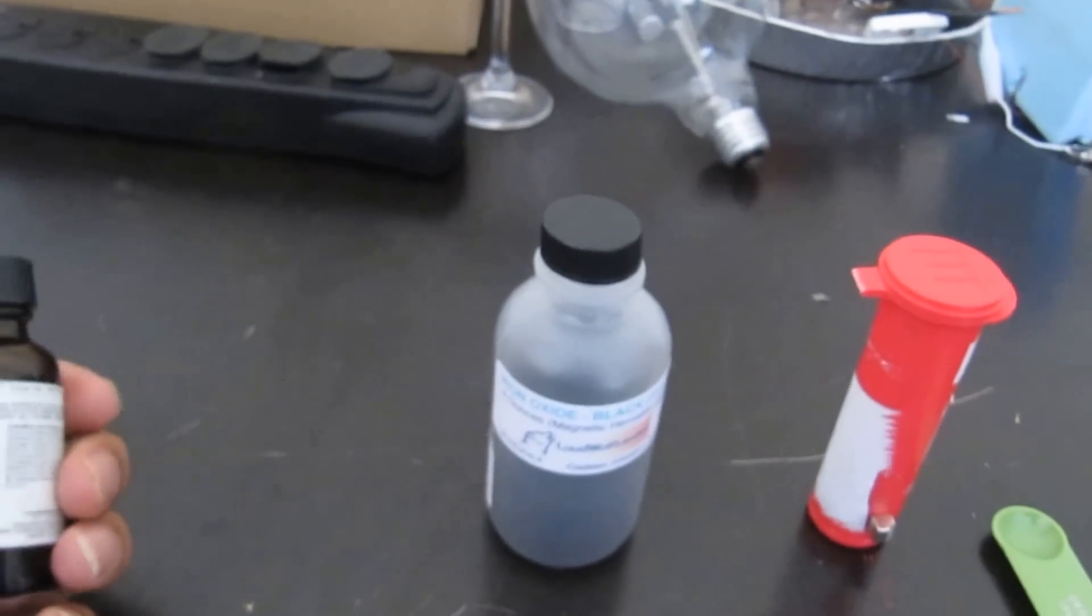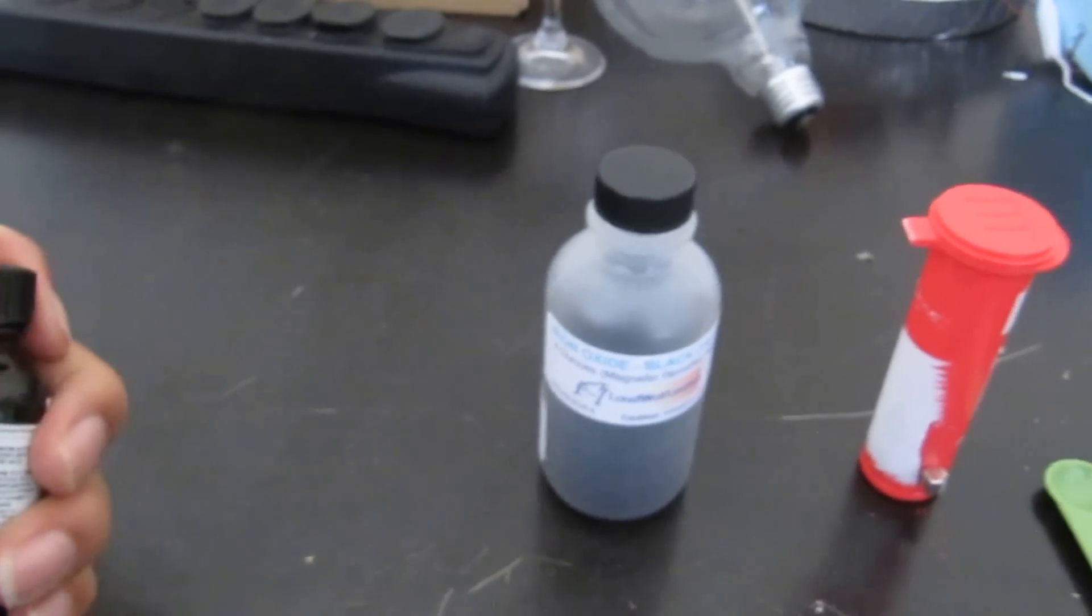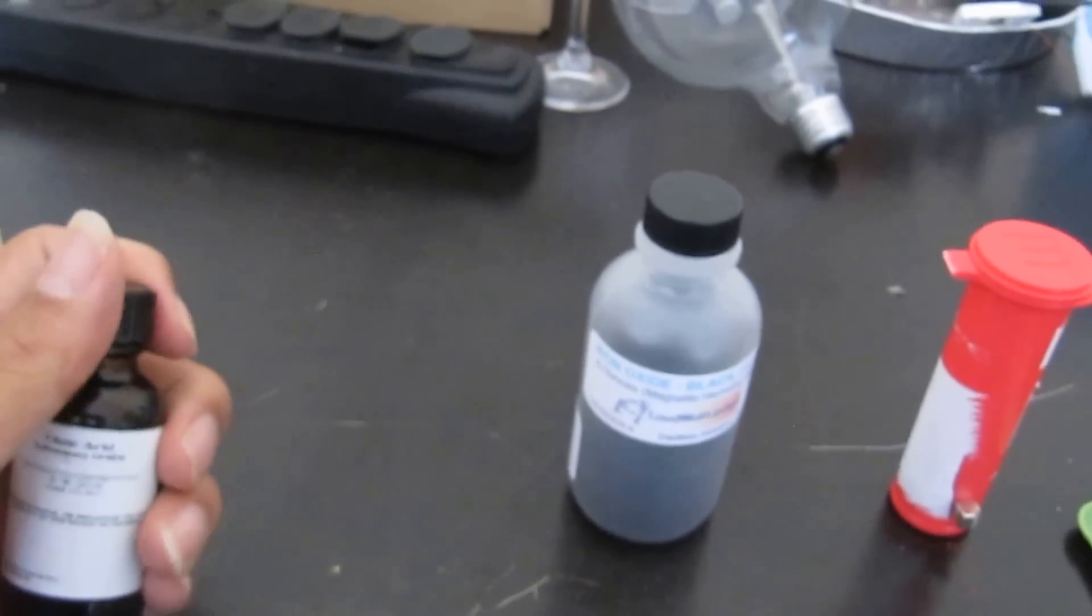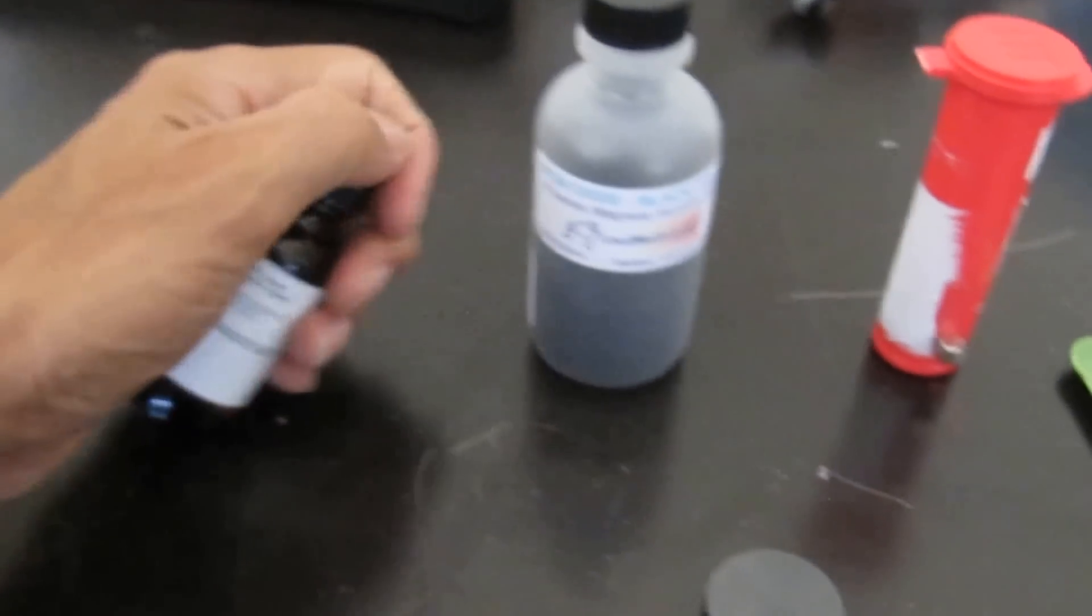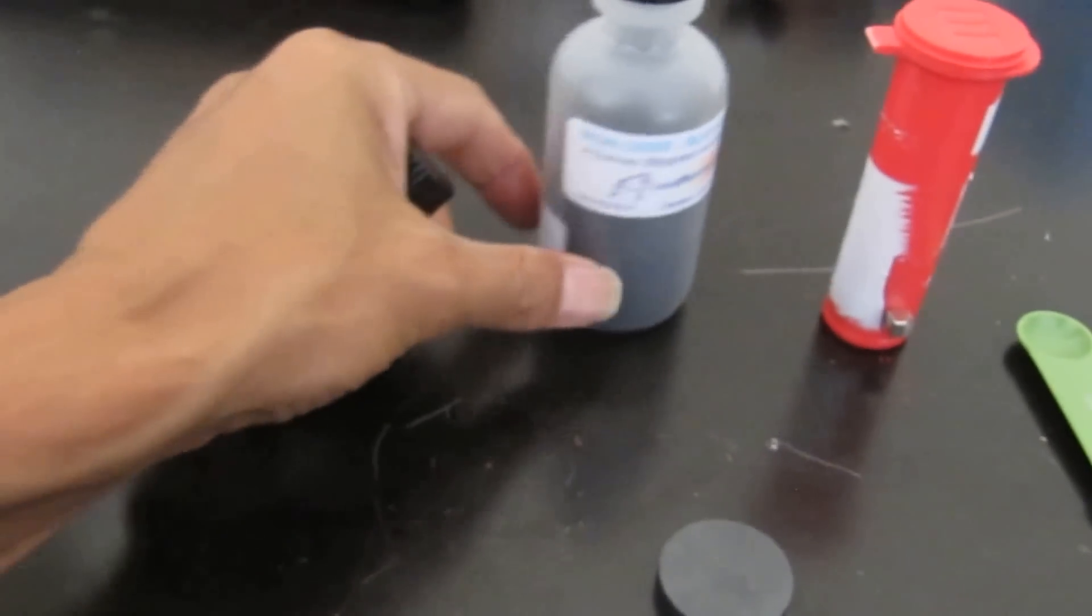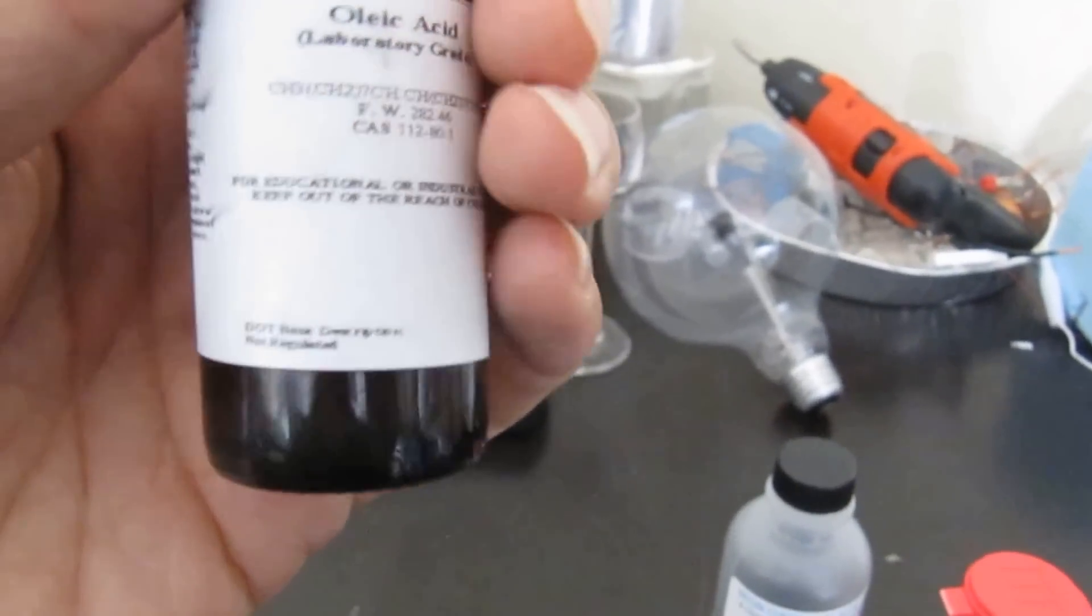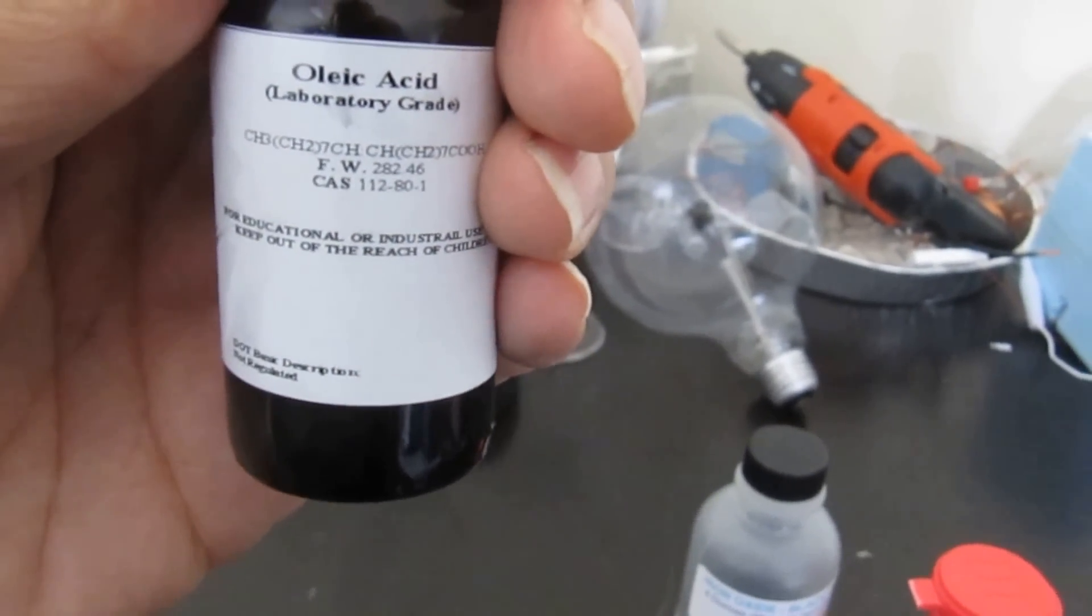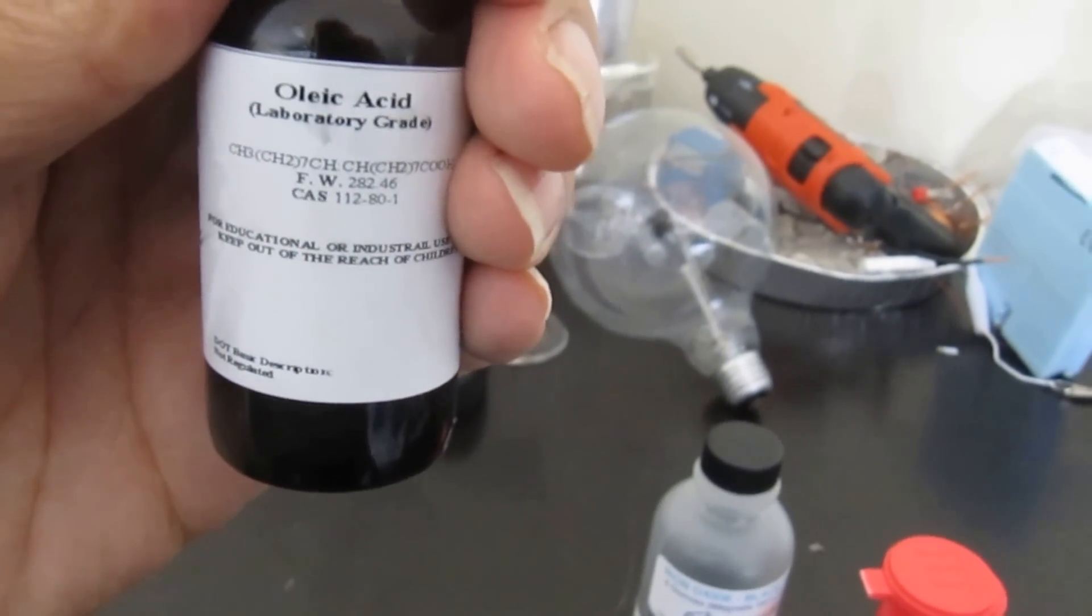This stuff is mineral oil, just basically mineral oil that you can buy in the pharmacy. You need some sort of agent that prevents the tiny iron or ferrous iron oxide particles from clumping together, and you can use like olive oil or oleic acid to prevent that from happening.